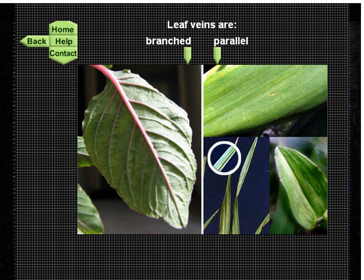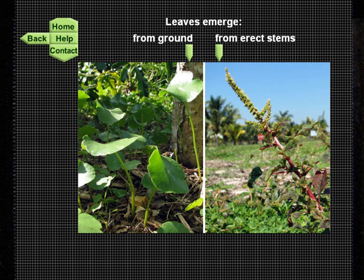The first characteristic in separating the weeds is whether the leaf veins are branched or parallel. Branched veins include the broadleaf weeds. Parallel-veined leaves include the grasses, the sedges, and a few exceptional situations such as the common creeping dayflower. Taking the left choice leads into the section of broadleaf weeds with branched veins.